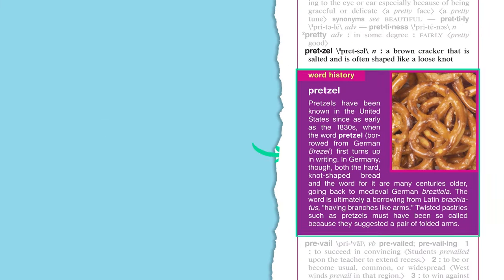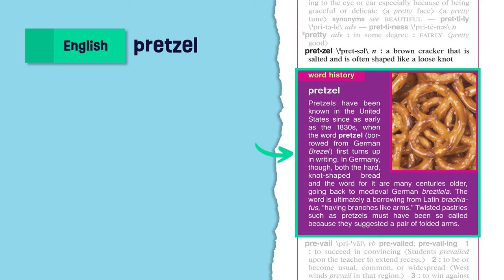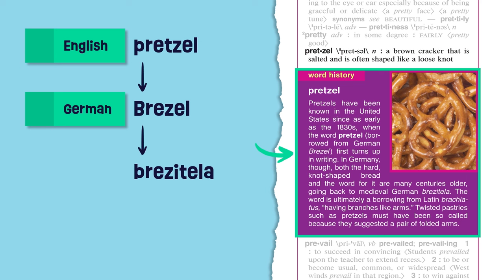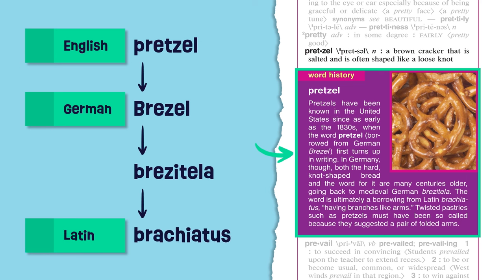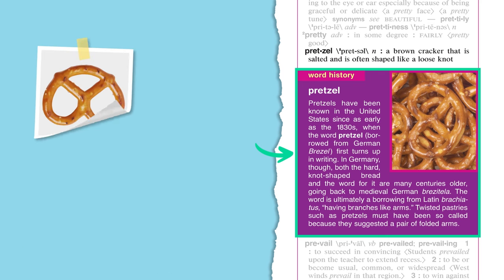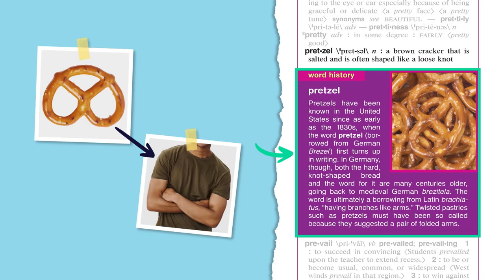Some entries include paragraphs that explain where a word comes from or how its meanings developed. The word pretzel, for example, first appeared in the U.S. in the 1830s. It comes from the German word brezel. This word and those tasty bread snacks go all the way back to medieval Germany. The older German word brezitella comes from an even older word in Latin, brachiatis, which means having branches like arms. What do pretzels have to do with arms? Well, you could say a pretzel looks like a couple of crossed arms.